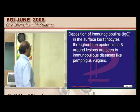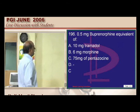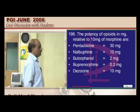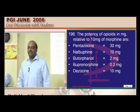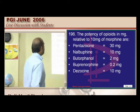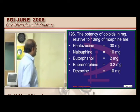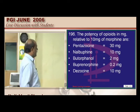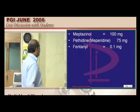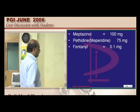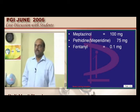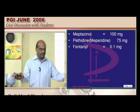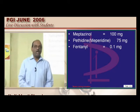Regarding buprenorphine potency relative to morphine: 10 mg of morphine equals 30 mg of pentazocine, nalbuphin is 10 mg, butorphanol is 2 mg, buprenorphine is 0.2 mg, and fentanyl is 0.1 mg — all as effective as 10 mg of morphine. Pethidine is 75 mg. Opioid and steroid potency comparisons are common exam questions.